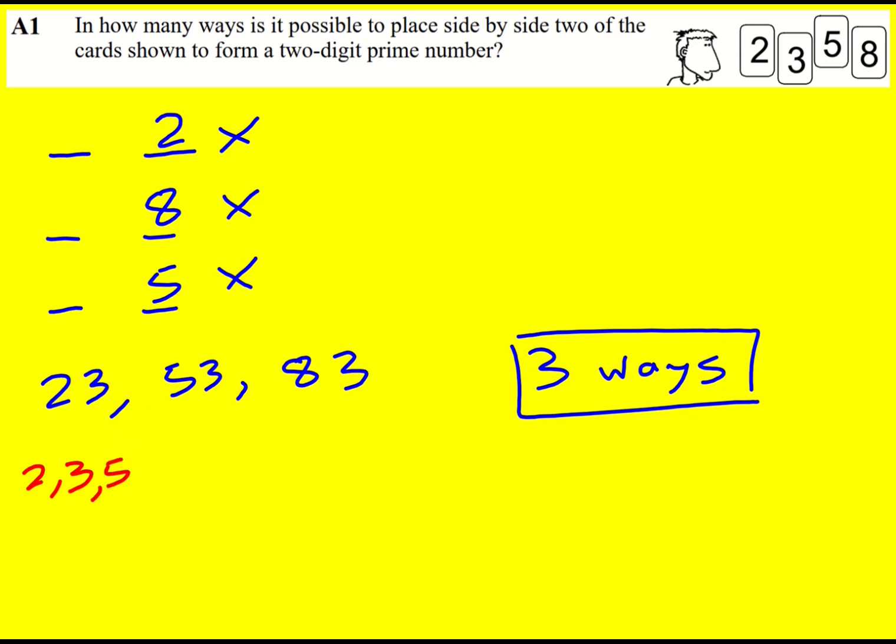And by 5, no, and we only need to go up to the square root of 23, which is just under 5. The reason we need to go up to the square root is if there's a number below the square root that's a factor, then there'll be a number above the square root that's also a factor.